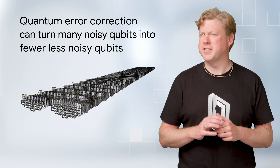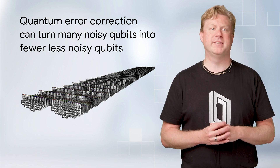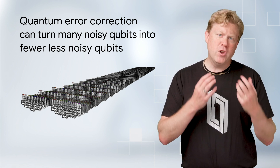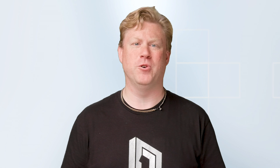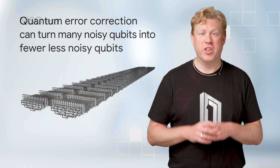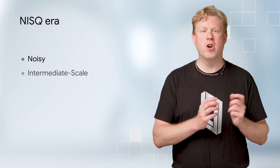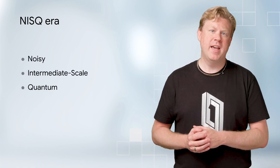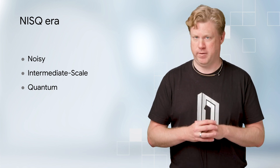We won't focus on error correction here, but it is a procedure for turning a bunch of noisy qubits into a fewer number of much less noisy qubits. Since today's quantum computers cannot perform arbitrary large or long quantum computation, an important question is, what can they do? This is the main question of what people call the NISQ era. NISQ stands for noisy intermediate scale quantum, and it is used to distinguish today's quantum computers from future error corrected quantum computers.